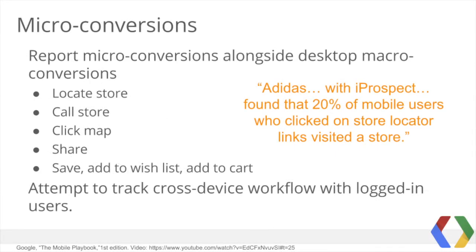Given mobile's diverse involvement in the purchase journey, many find it useful to track micro-conversions. Within your company, you can report these micro-conversions alongside desktop macro-conversions. They may include when mobile visitors locate a store, call the store, click the map for directions, share, save, add to wishlist, or add to cart. It's reassuring to note that Adidas, with iProspect, found that 20% of mobile users who clicked on store locator links visited a store. If possible, also track cross-device workflow with logged-in users. The main takeaway is that rather than blindly reuse desktop metrics for mobile, look at mobile task completion and follow mobile behaviors step-by-step as a contribution to conversion.